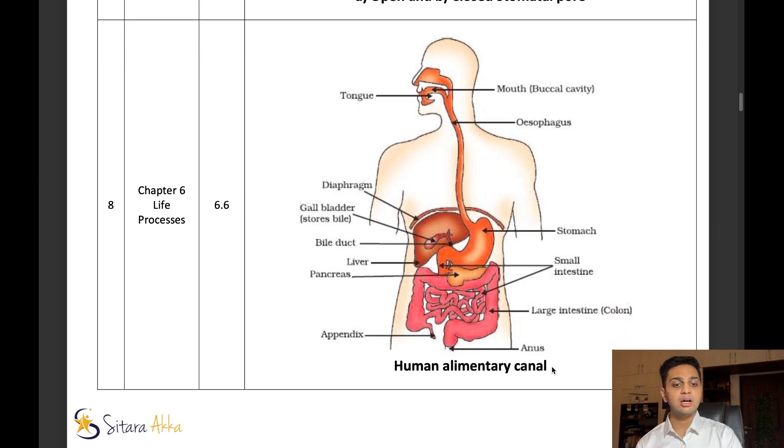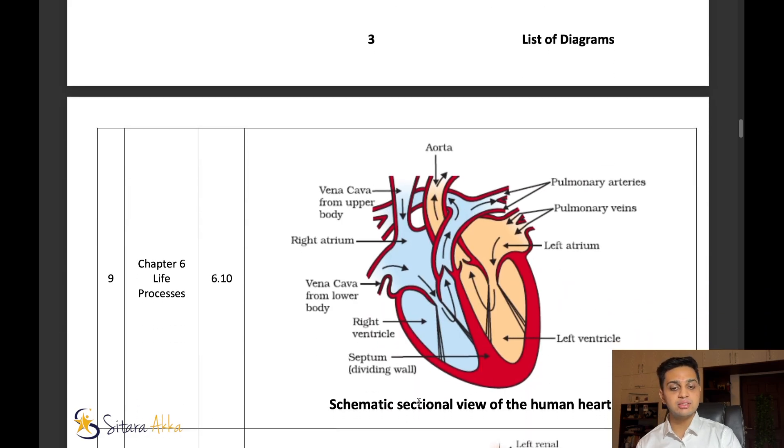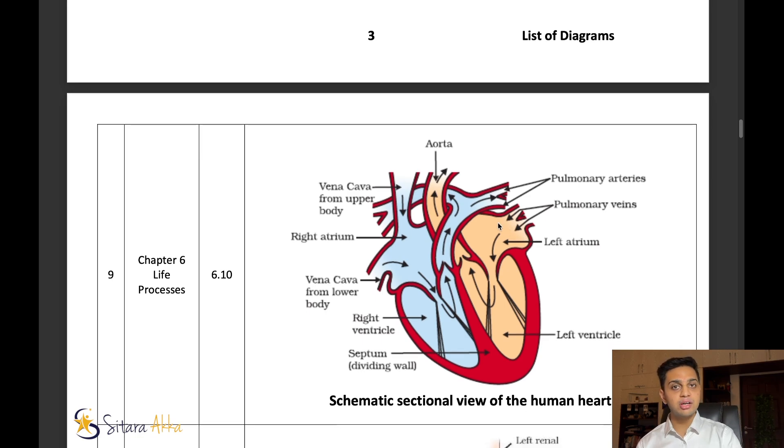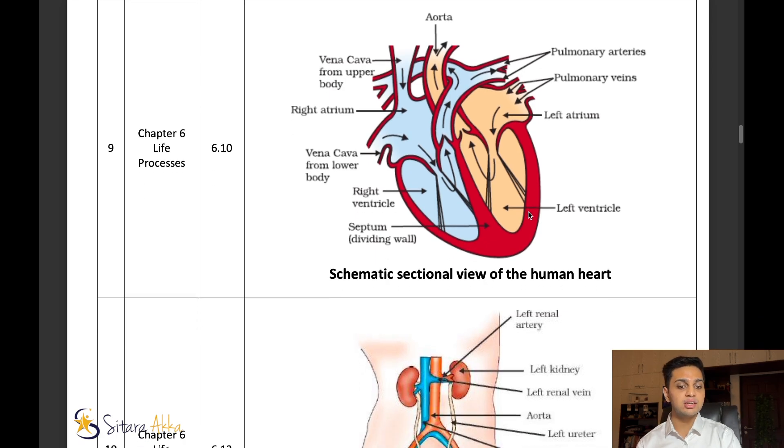We also have to write their functions in the question. Usually, this is a four or five mark question. Next, a very important diagram is the heart diagram. You have to practice this. Understand where the blood is coming in, where the blood is going out, and mark all of the important organs in the heart diagram. Practice this one diagram a lot for yourself. This can be worth three or four marks, and this diagram is very important. You don't want to lose marks on this diagram.